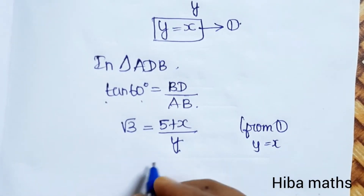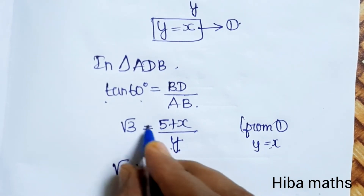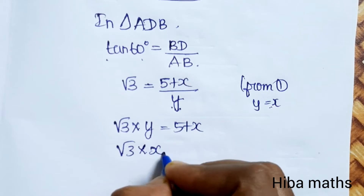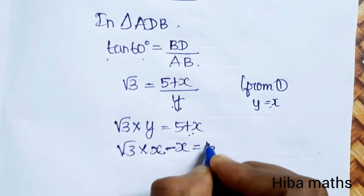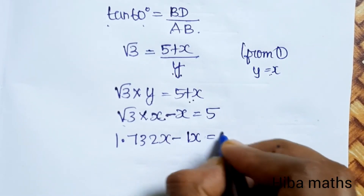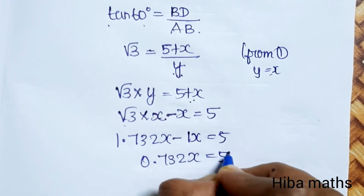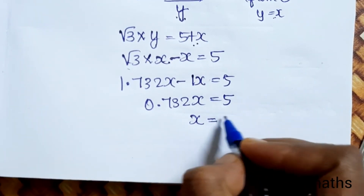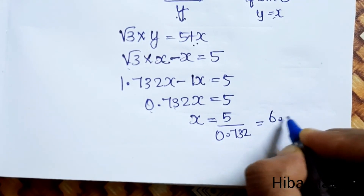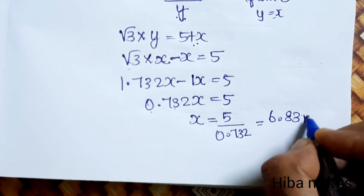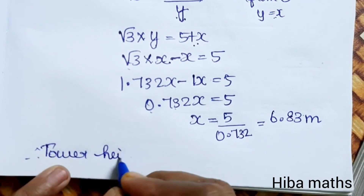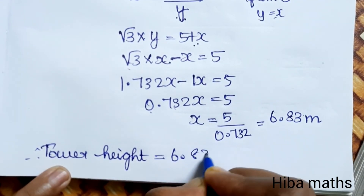Since y equals x from result 1, root 3 times y equals 5 plus x. Substituting, root 3x minus x equals 5, so 0.732x equals 5, giving x equals 5 divided by 0.732. Therefore, the tower height is 6.83 meters.